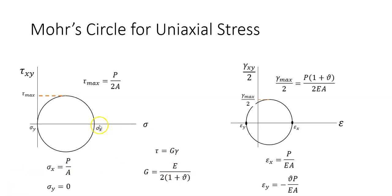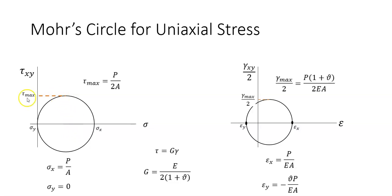Notice that at theta equals zero, we have the principal plane because there is no shear stress on that plane. At 90 degrees from this principal plane in Mohr's circle — which is 45 degrees in reality — we have the maximum shear stress. Thank you.